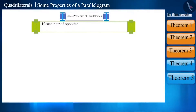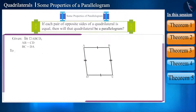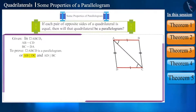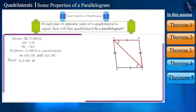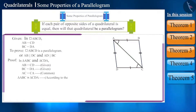Suppose the opposite sides of quadrilateral ABCD are equal. If we draw diagonal AC, we get triangles ABC and CDA. In both triangles, side AB equals side CD, side BC equals side DA, and side AC is the common side. Hence both triangles are congruent by the SSS congruence rule. Therefore angle BAC and angle DCA are equal, forming alternate angles. Since alternate interior angles are equal, side AB is parallel to side DC.